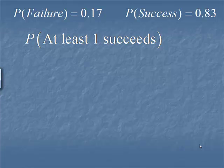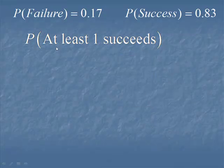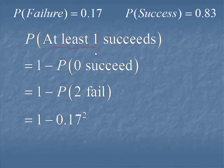Remember that the probability of at least one... Whenever we see at least one, we need to remember that the complement of that event, 0 successes, will be easier to calculate. So we're going to calculate the probability of 0 successes and subtract from 1. Keep in mind that 0 successes is the same as two failures. Multiply the probability of failure by itself and subtract from 1, and we get a probability of 0.9711.